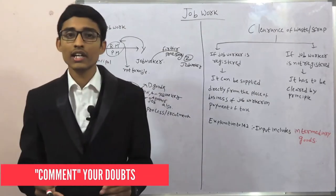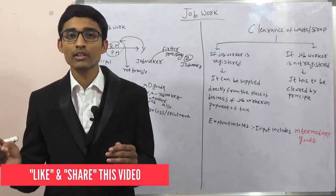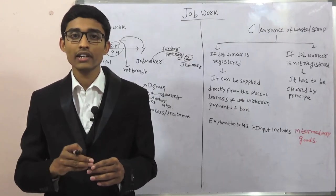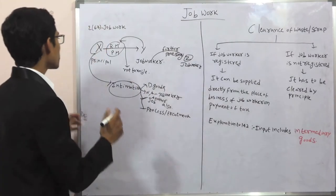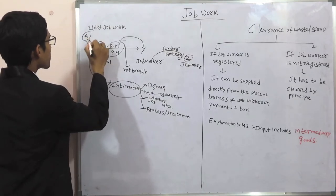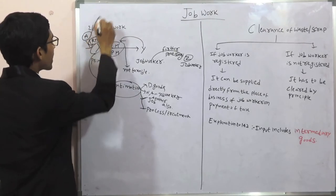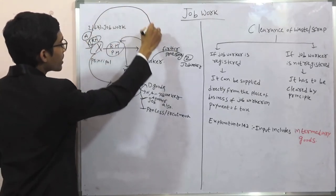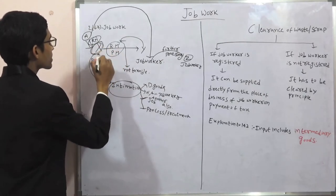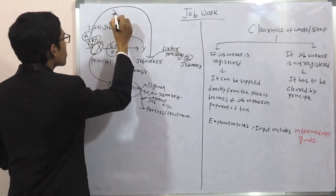Even if the goods are directly sent by the supplier to the premises of the job worker without bringing them to the premises of the principal, in this case also the principal can take input tax credit. For example, A is the supplier of raw material to X Limited. If A is directly sending the materials to the job worker without bringing them to the premises of X, in this case also X can take input tax credit.